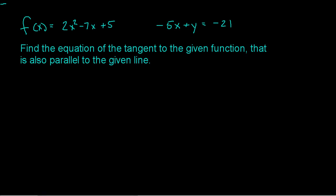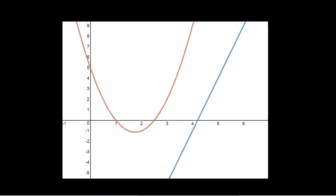I always recommend taking a quick look at a picture of this. I used Desmos, an online free graphing calculator, and graphed the function and my line. The red is my function and the blue is my line. You could almost see the answer — there's got to be a line out there that is parallel and tangent. Somewhere around here is a point x comma f of x, and that is my point of tangency, where the slope is also parallel to the blue line.